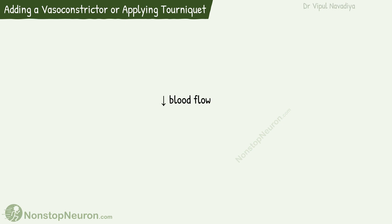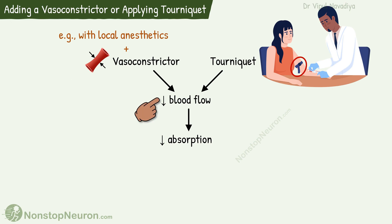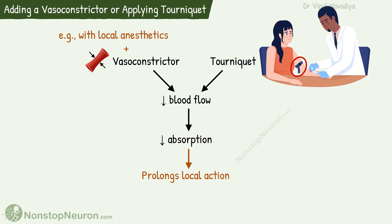In the video on factors affecting drug absorption, we have seen that decreased blood flow decreases absorption. So if we want to decrease absorption, one way to do so is to decrease blood flow where the drug is administered. Methods for this are adding a vasoconstrictor drug or applying a tourniquet. For example, local anesthetics are often combined with vasoconstrictors like noradrenaline or adrenaline. Vasoconstriction caused by them decreases local blood flow, so absorption of the anesthetic into the systemic circulation is decreased. This prolongs the local action of the anesthetic and also decreases systemic toxicity.